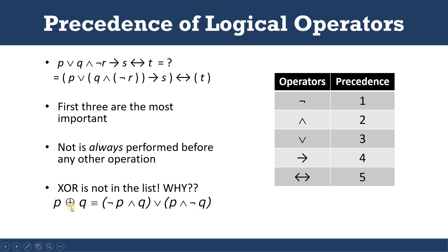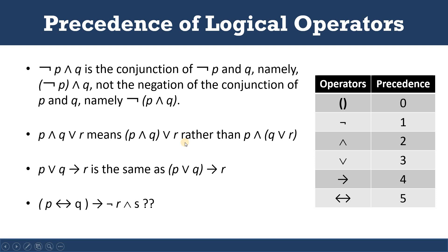The proposition is equivalent to the OR operation of (not p and q) and (p and not q) — that is, the XOR operation can be expressed using basic logical operators: not p and q, OR p and not q. So instead of using the XOR operator, we can use the basic logical operators, and we know their precedence from the precedence table. Note that 'not p and q' means the conjunction of (not p) and q — it is NOT the negation of the conjunction of p and q. The NOT operator acts on p first, then the result is ANDed with q.